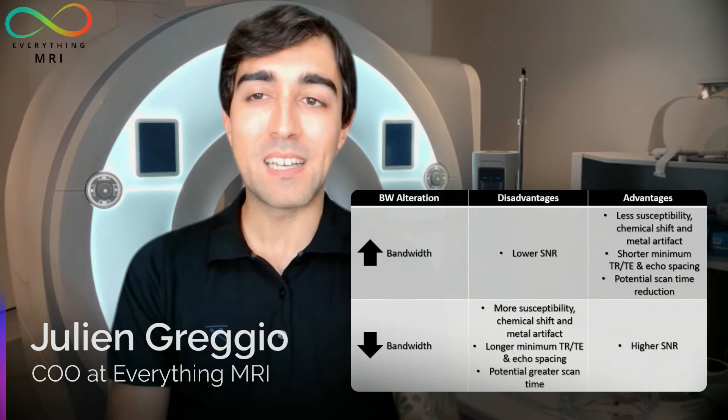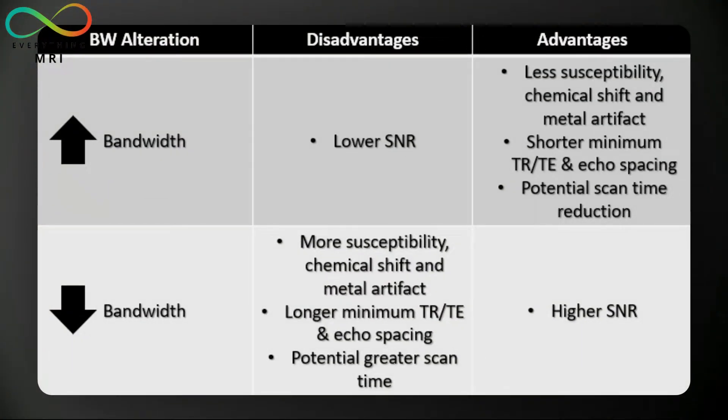A legitimate question is: do we ever decrease the bandwidth instead? There are a number of situations where lowering the bandwidth might be recommended, and this actually comes with several advantages on image quality. The main benefit of going down with the bandwidth is an increase in the overall SNR — and we're talking about a substantial increment. Halving the bandwidth, in fact, can increase the SNR between 30 and 40 percent.